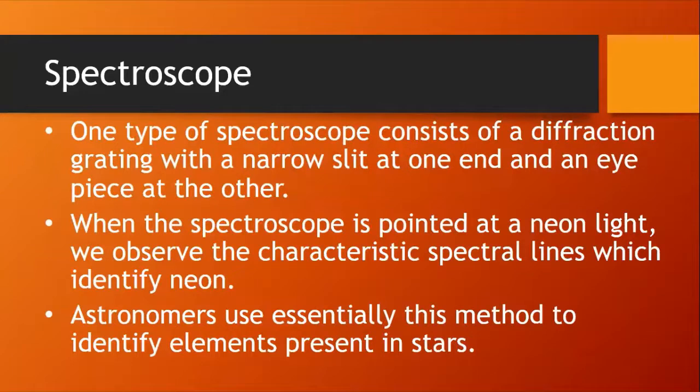Well, one type of spectroscope simply consists of a diffraction grating, a small diffraction grating with a narrow slit at one end of the tube and an eyepiece at the other. And so essentially a spectroscope or a spectrometer contains a diffraction grating which enables us to measure the wavelength of any spectral line present in the line spectrum, or indeed the wavelength of all lines, which is information astronomers would use to identify the elements present in a star.